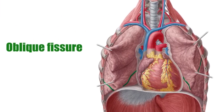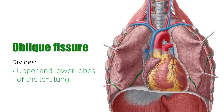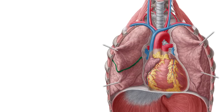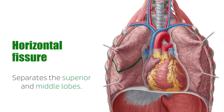Fissures help separate the lobes, and each lung has an oblique fissure, which divides the upper and lower lobes of the left lung and the middle and lower lobes of the right lung. The right lung also has a horizontal fissure, which separates the superior and middle lobes.